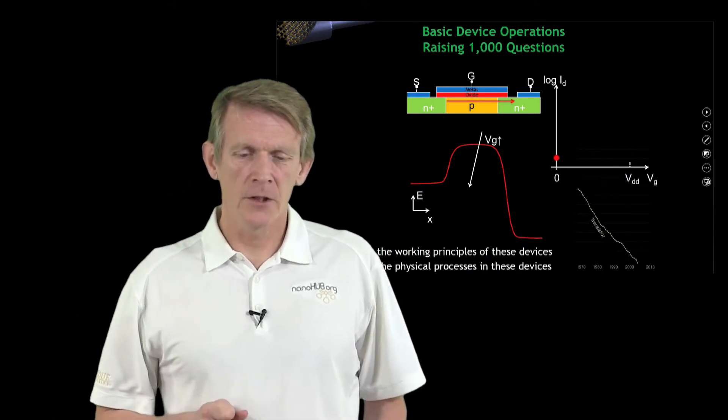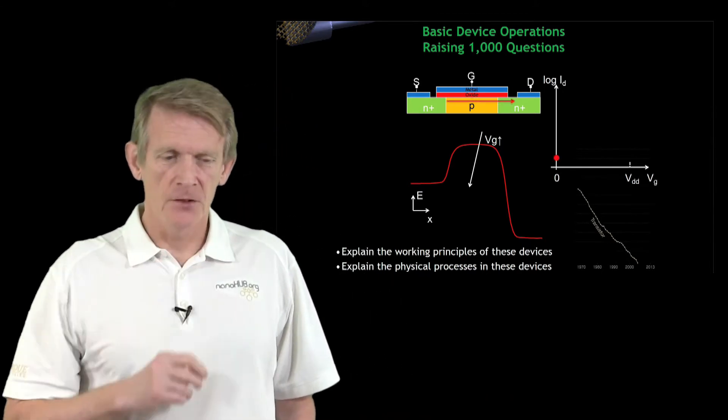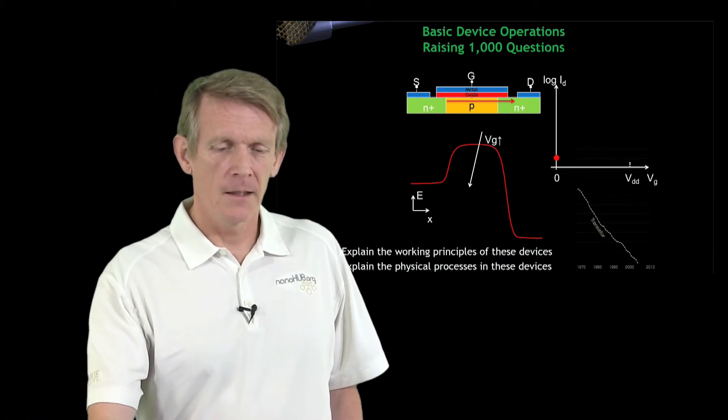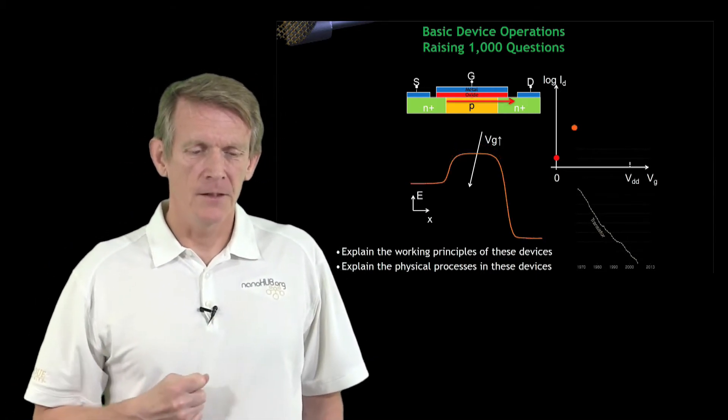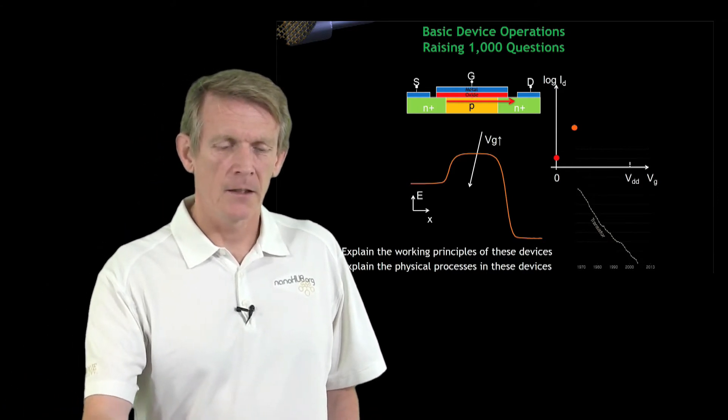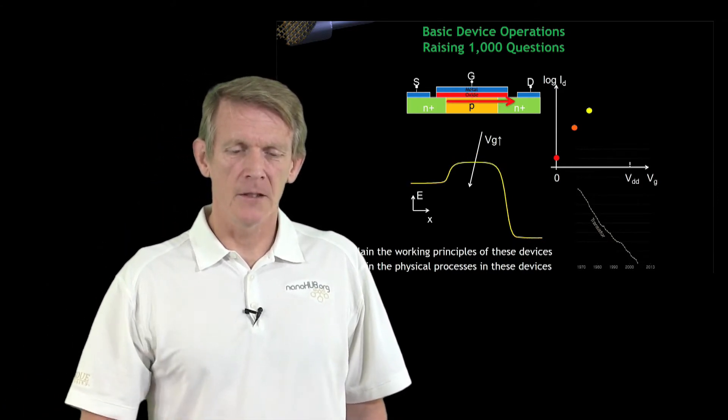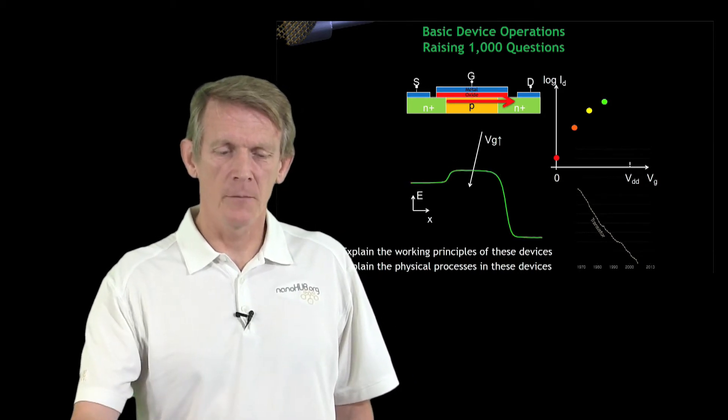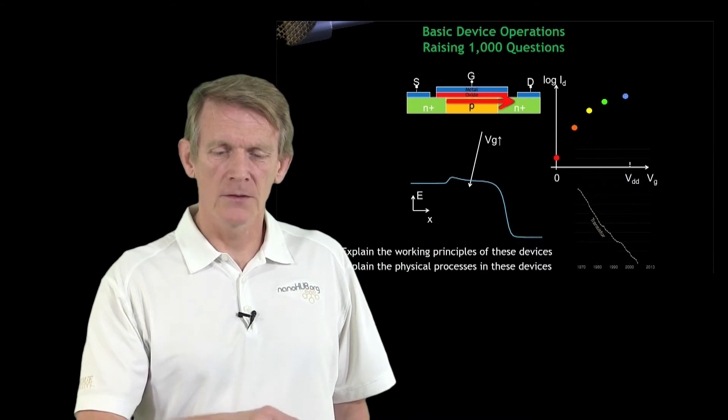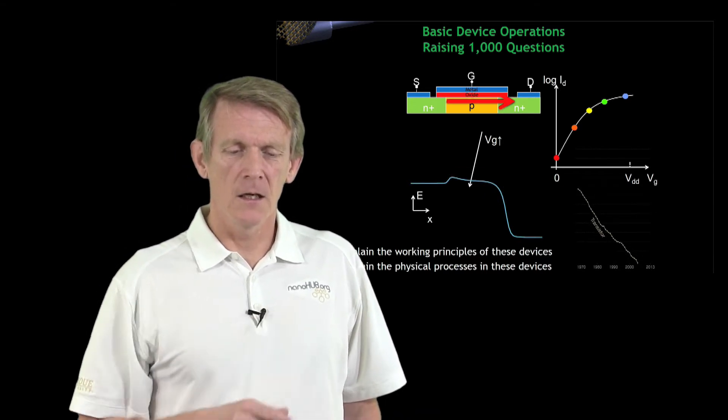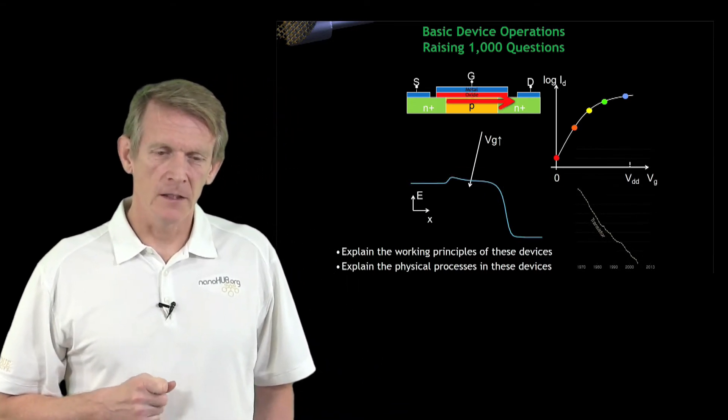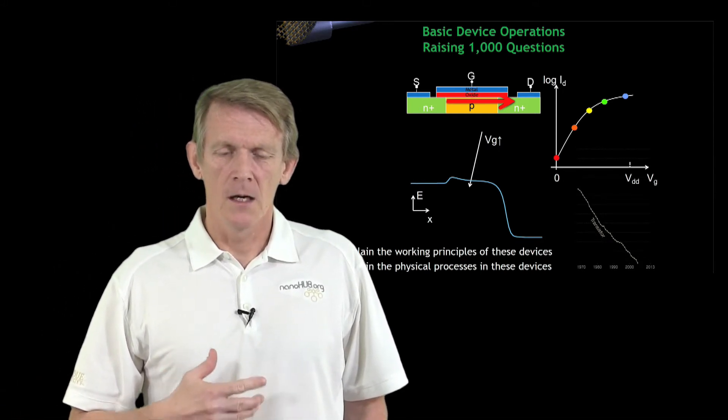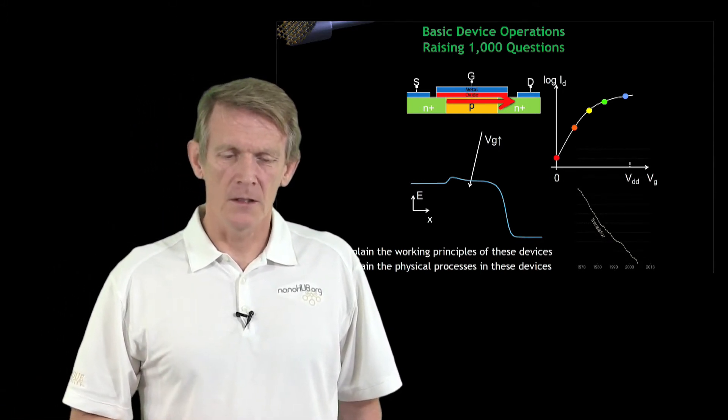Current will flow as a channel is induced under the gate. In this channel, as you open it up, more electrons can flow and current will rise. You lower the barrier more, more current will flow. You lower the barrier more, and so on, reaching a large current flowing device that increases from a small number to a larger number.